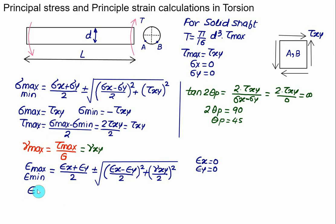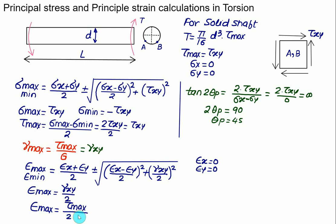Therefore ε_max = γ_xy/2, and since γ_xy = τ_max/G, the maximum principal strain in pure torsion equals τ_max/(2G). These equations give the maximum principal stress, minimum principal stress, maximum normal stress, and minimum normal stress, but all this discussion is valid only for points on the outer surface, where shear stress is maximum.